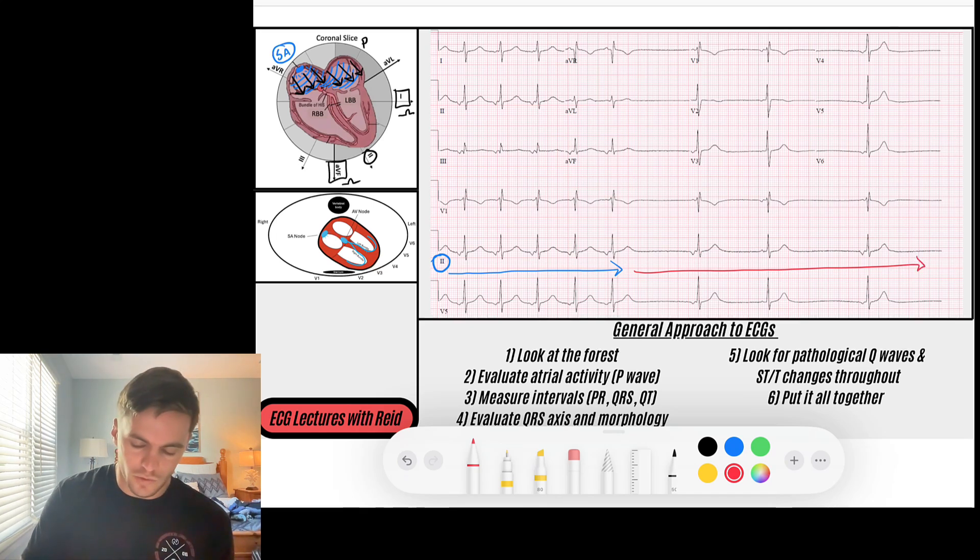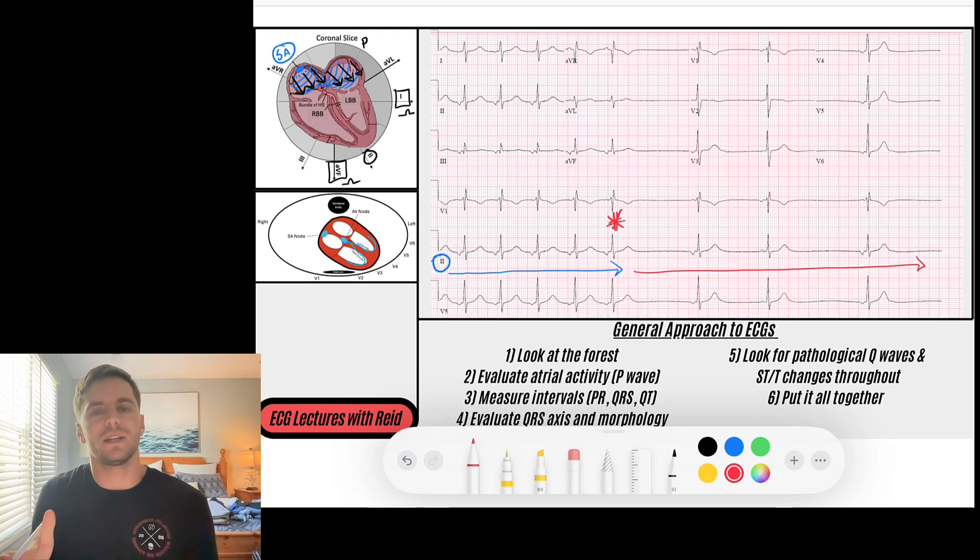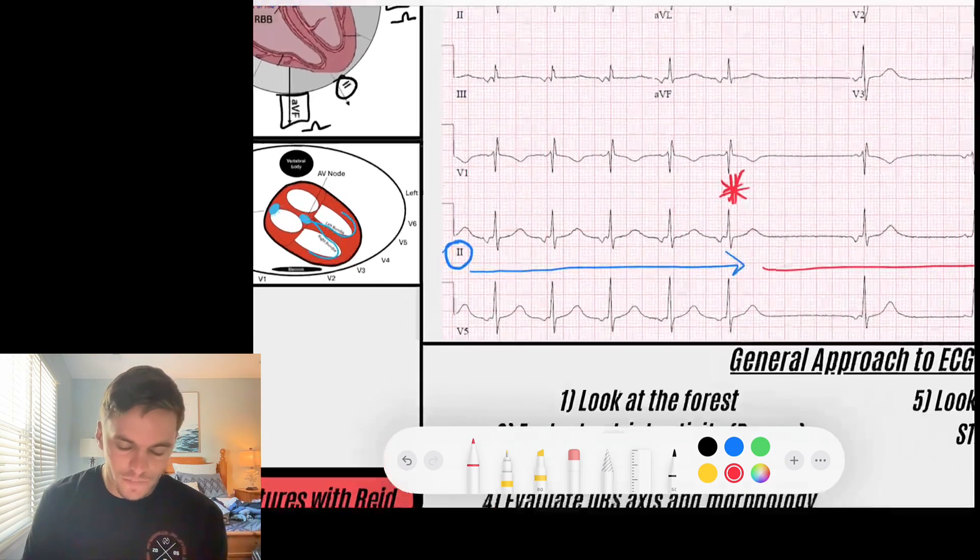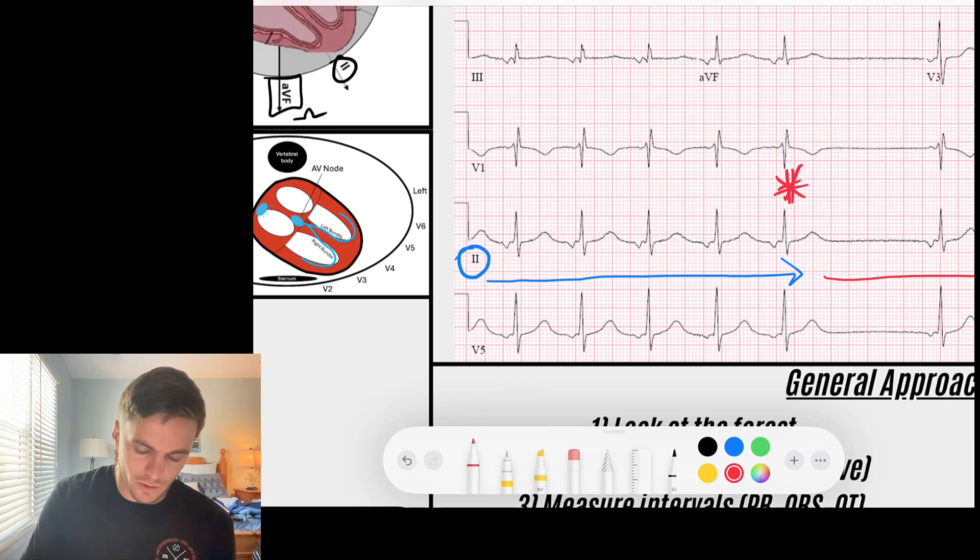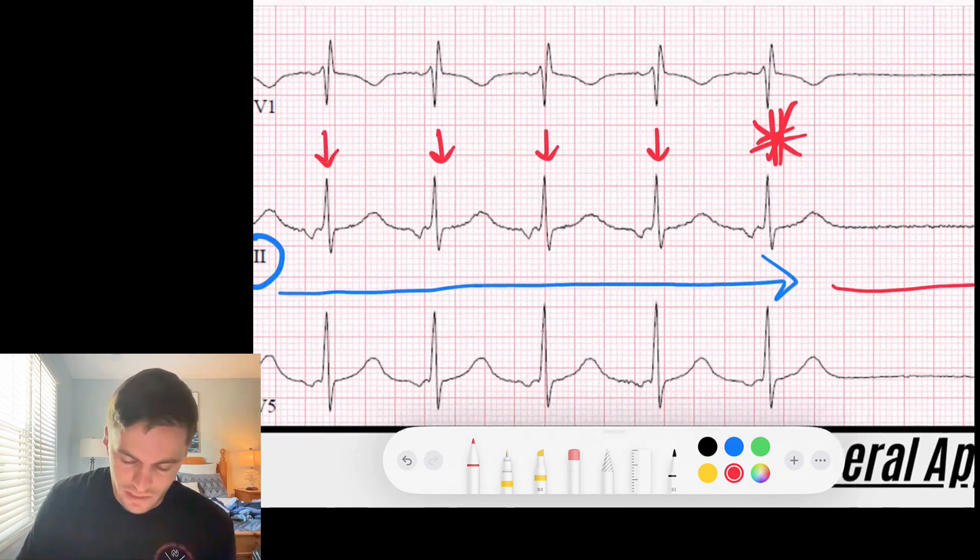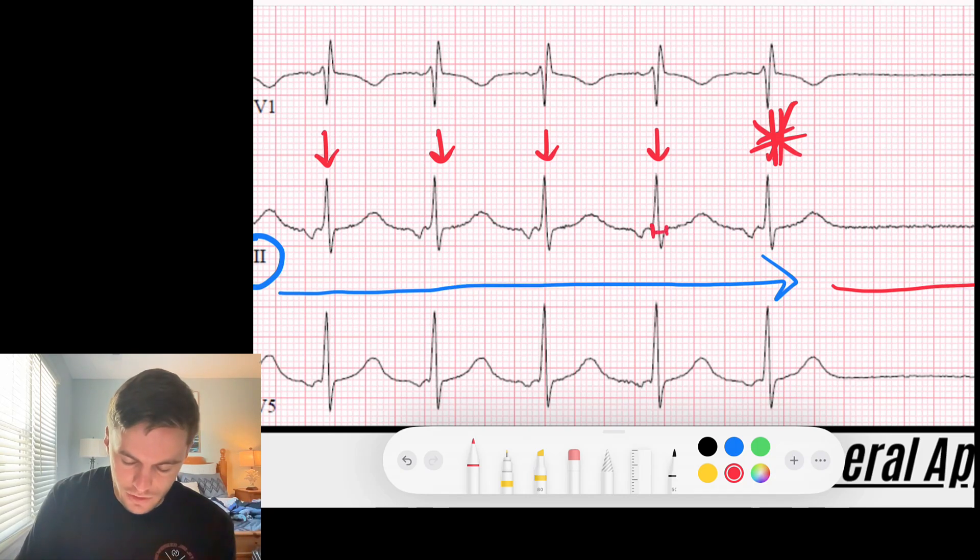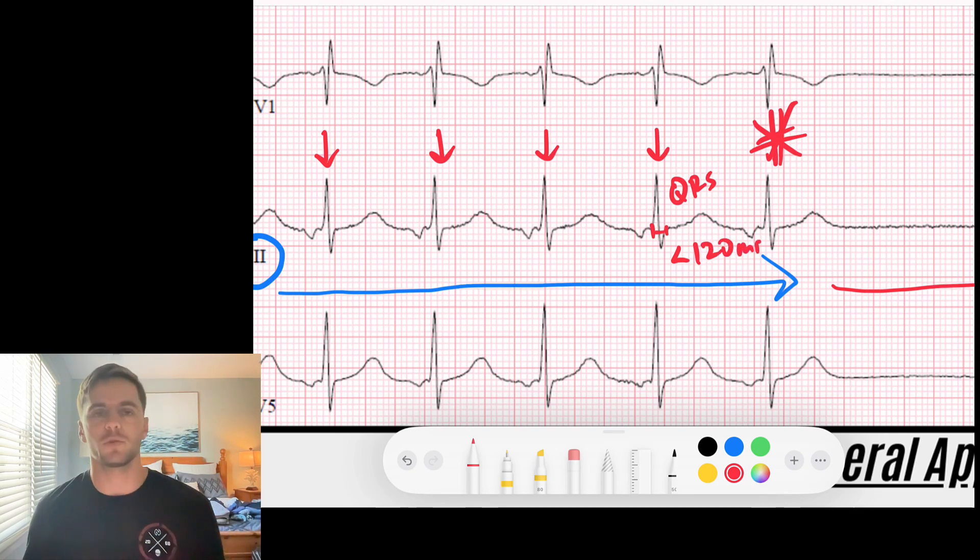Let's take a look at this EKG and then we'll dive into the mechanisms. First thing I'm going to notice is when I initially look at this rhythm, maybe I look down here at lead two, I notice that initially it seems to be a nice regular rhythm, and then all of a sudden the remainder of the rhythm is very slow. So I want to know what changed right here where this asterisk is—what changed? So what happened before and what happened after?